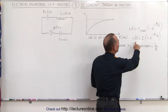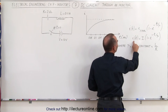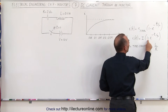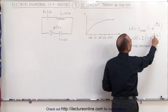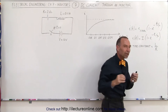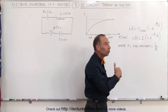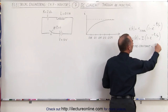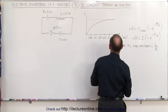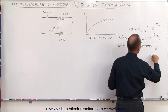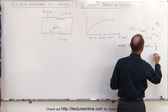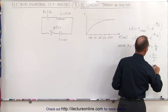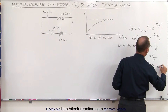Here we have the equation that describes this curve. I as a function of time is equal to the final value of the current times the quantity 1 minus E to the minus T over tau. T is time, and tau is the time constant of the circuit. In an RL circuit — a circuit that has an inductor and a resistance — the time constant is equal to the inductance divided by the resistance. So in this case, tau equals 0.1 Henrys divided by 2 ohms, which equals 0.05 seconds.